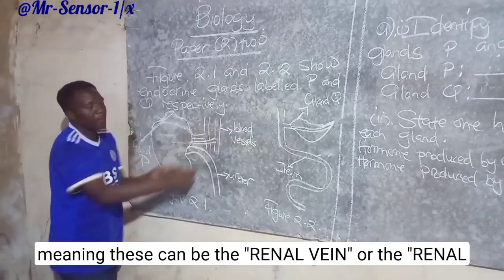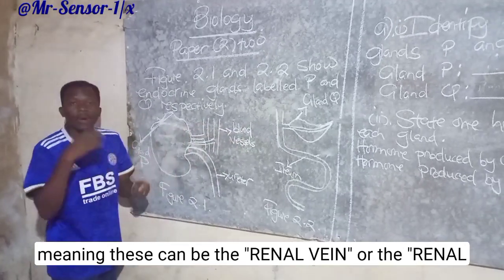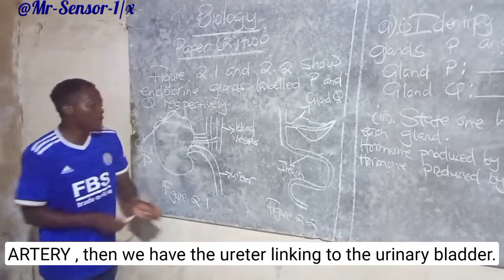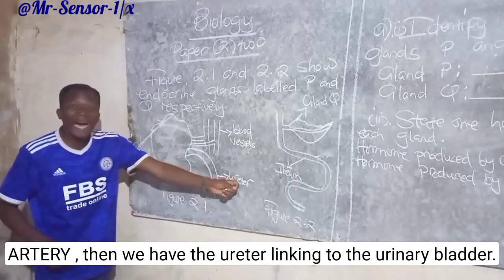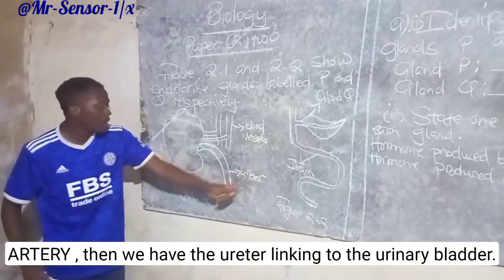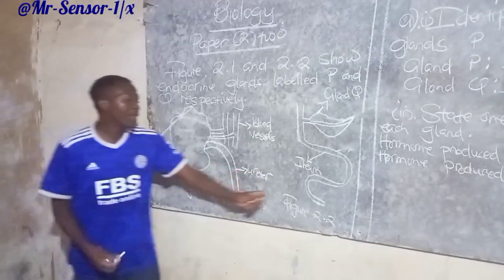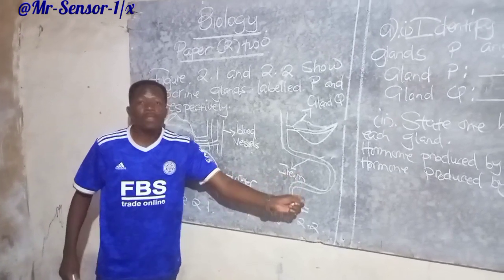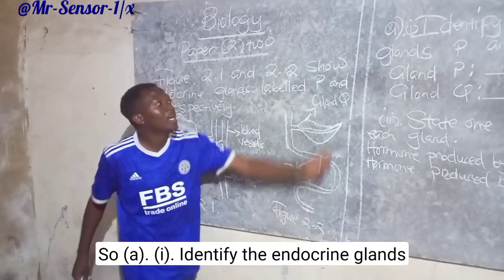In this case we have the blood vessels, meaning these can be the renal vein or the renal artery. Then we have the ureter linking to the urinary bladder. Then we have the ilium linking to the colon.